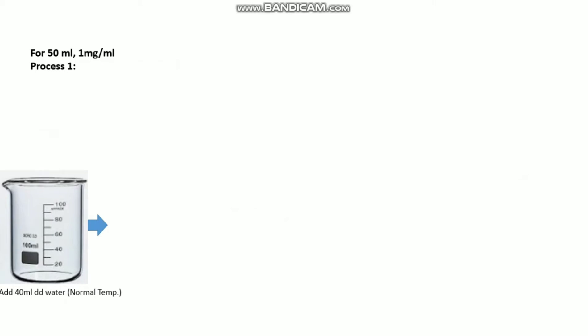In a 100 ml beaker, take 40 ml double distilled water at normal temperature, then add 50 mg PEI. So 50 mg PEI in 50 ml dd water means the final concentration will be 1 mg per ml.